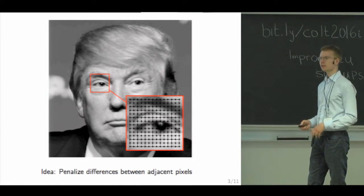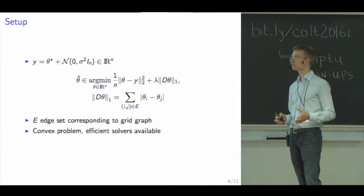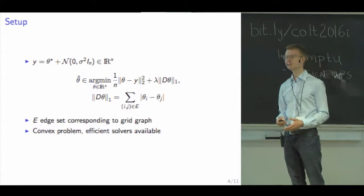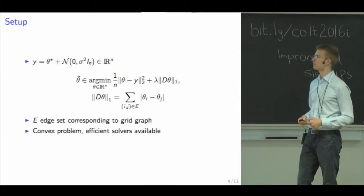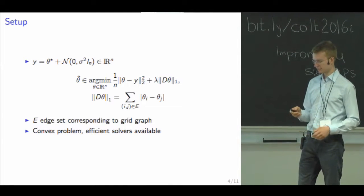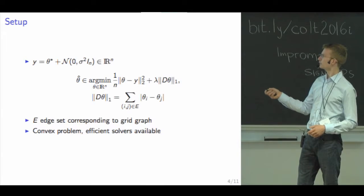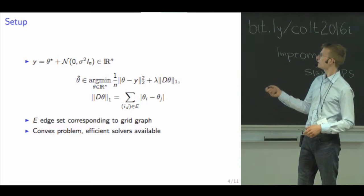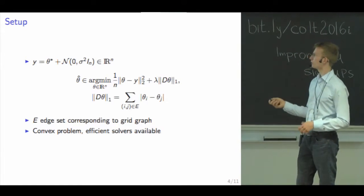To analyze this, let's pick a very simple Gaussian sequence model where our signal is a ground truth theta-star perturbed by homoscedastic Gaussian noise with variance sigma squared. The total variation denoiser is then defined as the solution of an optimization problem with a quadratic fit term plus a penalty term — an L1 term — which penalizes all the differences between adjacent pixels, traded off by tuning parameter lambda.